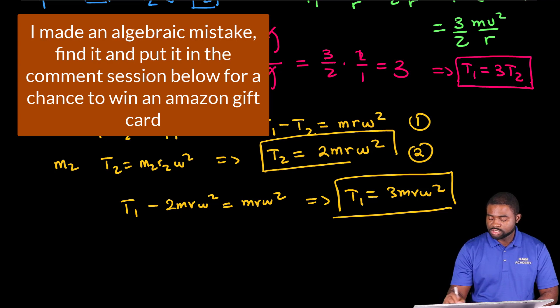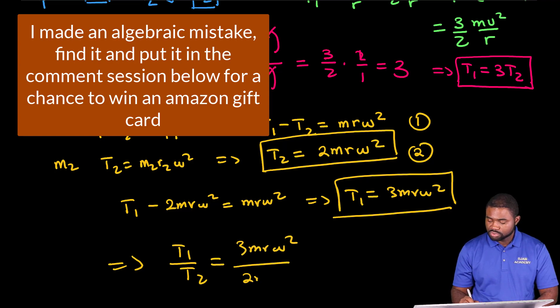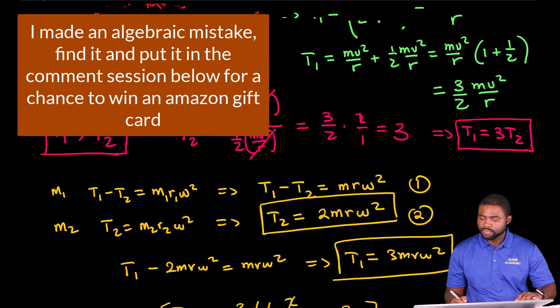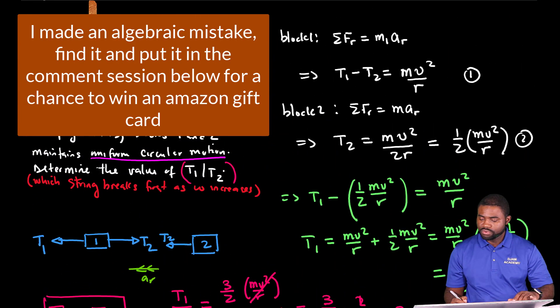So T1 over T2 equals 3MR omega squared divided by 2MR omega squared. The M's cancel and this is equal to 3 over 2. Interesting, so if it's 3 over 2 it means that we made a mistake somewhere up here. Let's review our work.